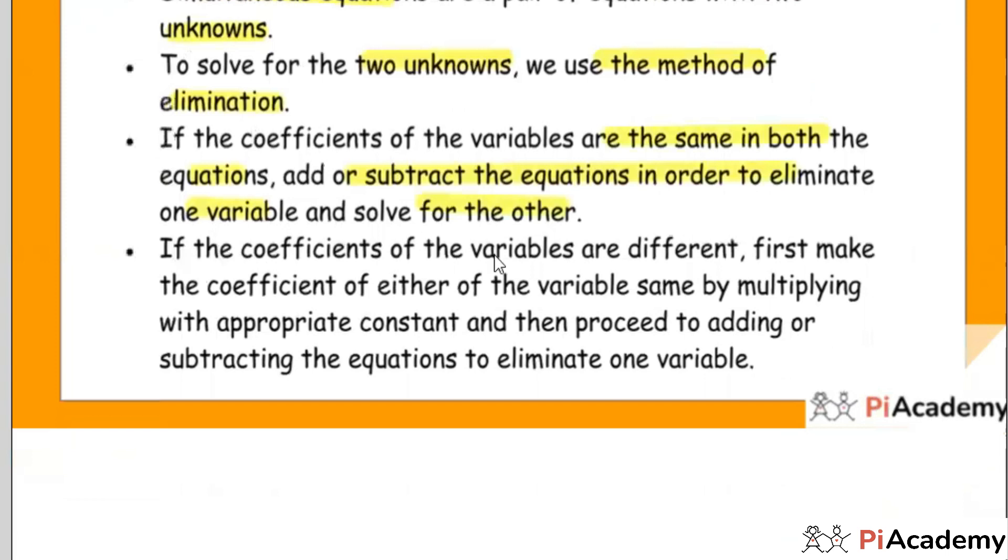If the coefficients of the variables are different, then first make the coefficient of either variable the same by multiplying with the appropriate number or you can say constant. And then you can add or subtract to eliminate them.